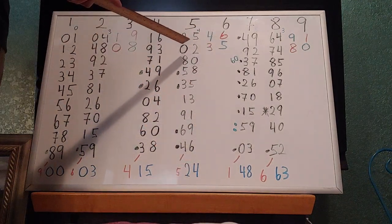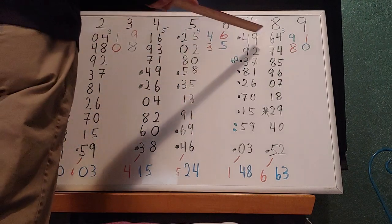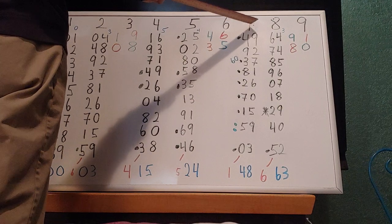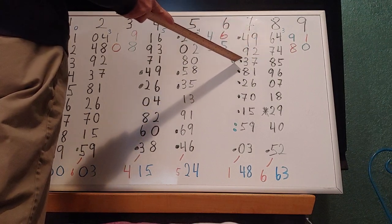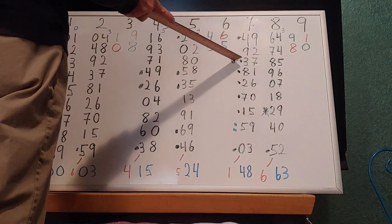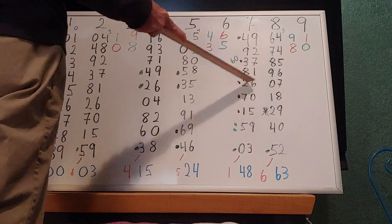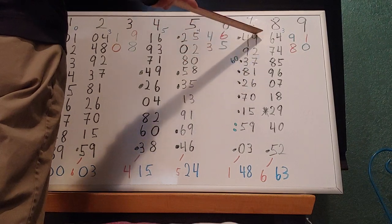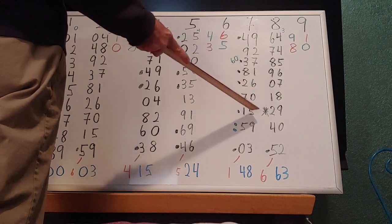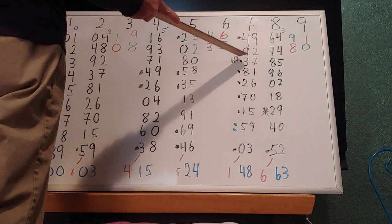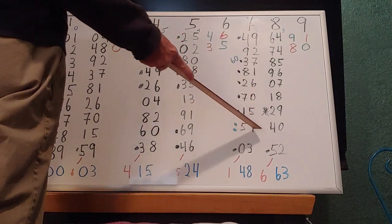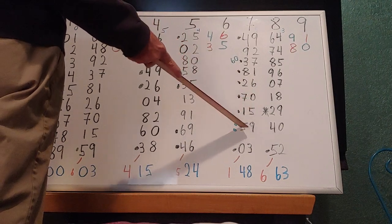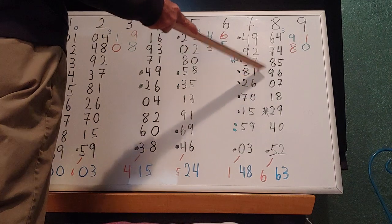Now we'll do 7. 7 squared is 49, 77 squared is 5929. Then 777 squared is 603729. Then 60481729. Then 604926 1729. Then 604937061729. Then 60493815061729. Then 6049061729. Then 604938270395061729.